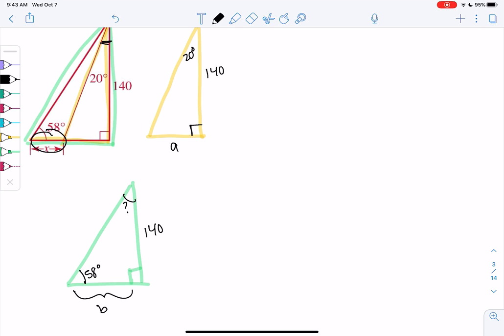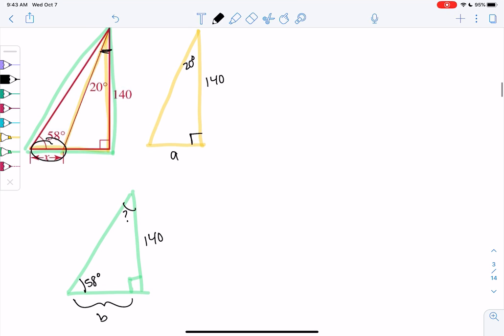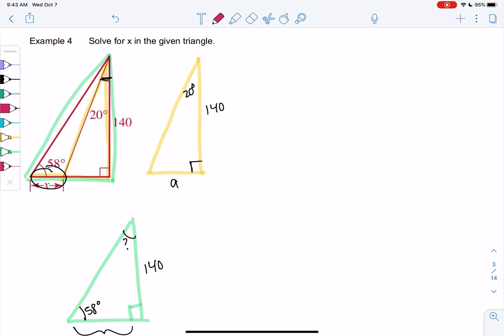So if I see multiple triangles, I like to draw them separately. I think that helps. So let's see. My angle's here. So 20. A would be opposite, because it's the opposite side. And 140 would be adjacent. So we can use tangent for TOA. So tangent of 20 would be A over 140. Opposite over adjacent. So A will be 140 tangent of 20.